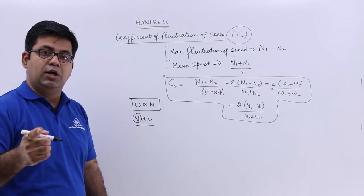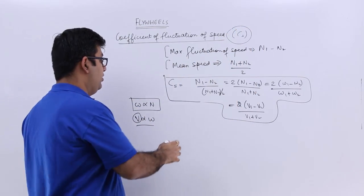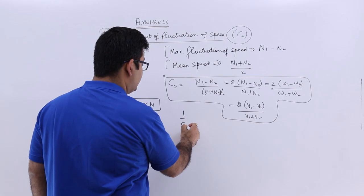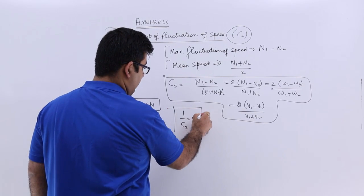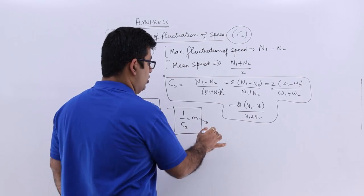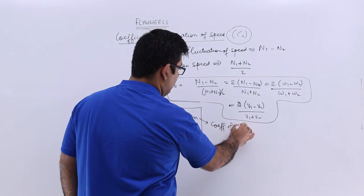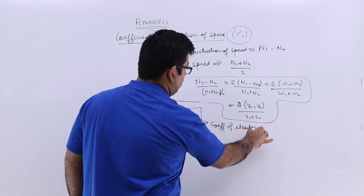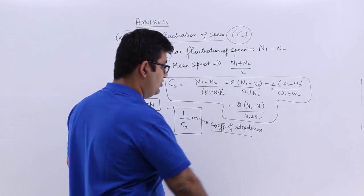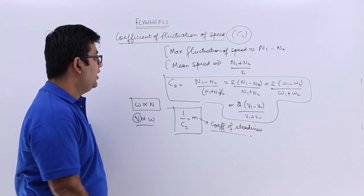Now, the reciprocal of Cs is denoted by small m. Here small m is called the coefficient of steadiness.